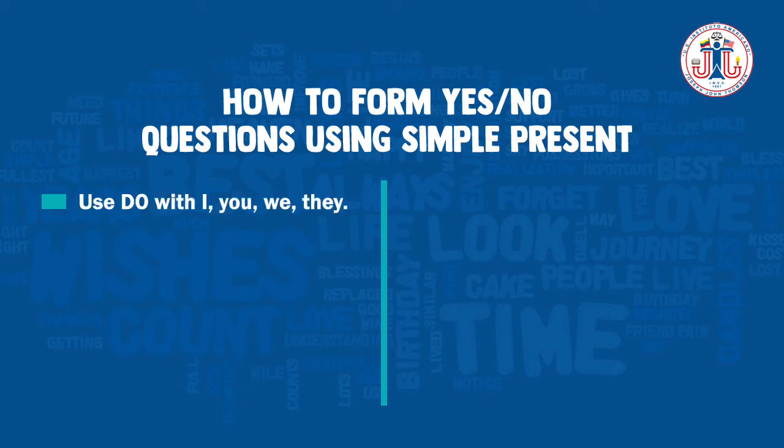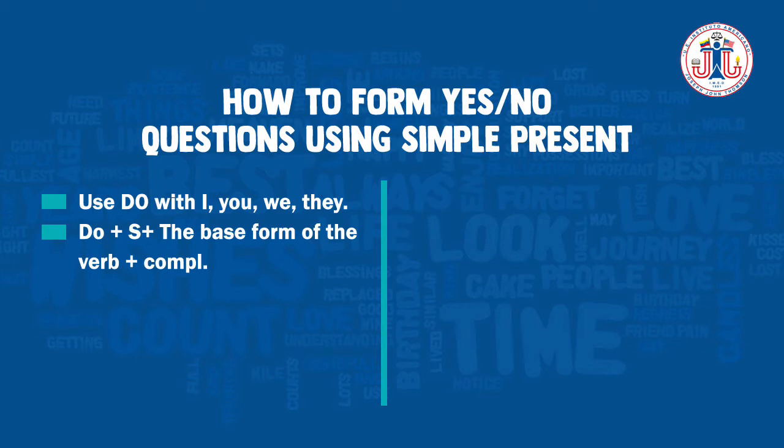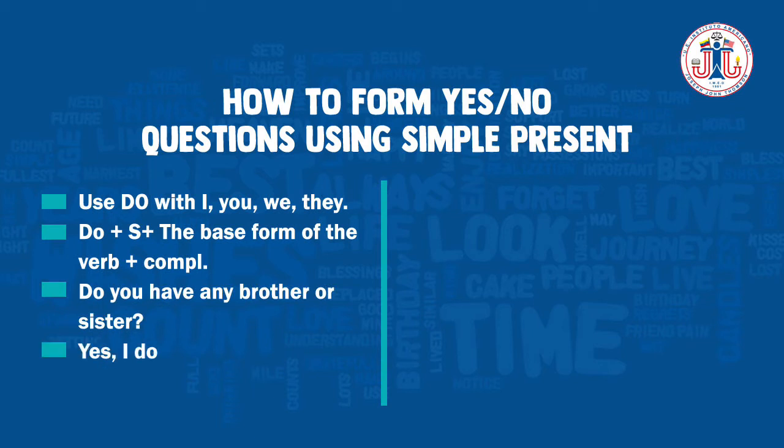How to form yes/no questions using the simple present. Use do with I, you, we, or they: do plus the subject plus the base form of the verb plus the complement. For example, 'Do you have any brother or sister?' If the question is affirmative: 'Yes, I do.' Or if it's negative: 'No, I don't' or 'No, I do not.'